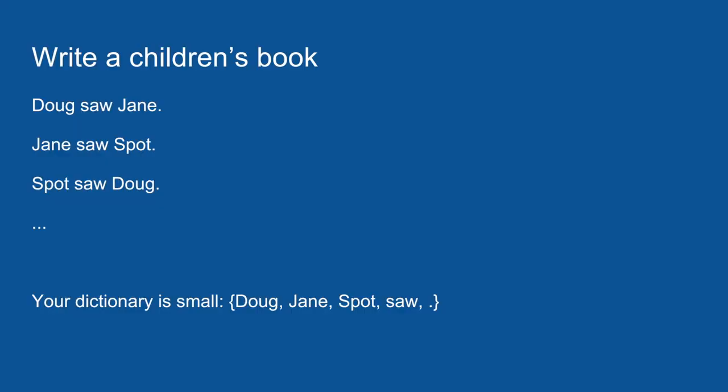So, this is a nice simple example that showed recurrent neural networks. Now to show how they don't meet all of our needs, we're going to write a children's book. It'll have sentences of the format, Doug saw Jane, period, Jane saw Spot, period, Spot saw Doug, period, and so on. So, our dictionary is small, just the words Doug, Jane, Spot, saw, and period. And the task of the neural network is to put these together in the right order to make a good children's book.